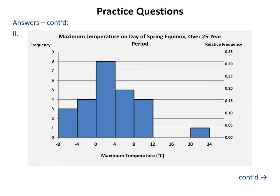The combined frequency and relative frequency histogram for the temperature data is constructed as interval data, so consecutive groups have no gaps — unless a group has frequency 0. Here the groups [12, 16) and [16, 20) both have zero occurrences, producing two neighboring gaps in the histogram.